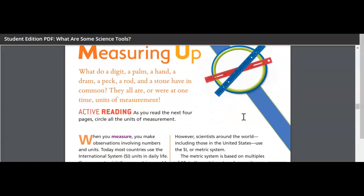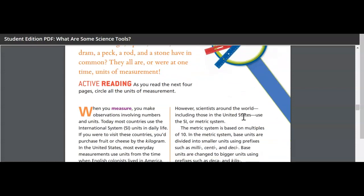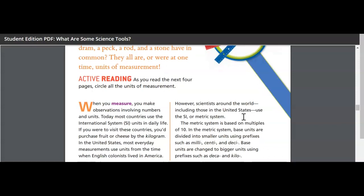Measuring up. What do a digit, a palm, a hand, a dram, a peck, a rod, and a stone have in common? They all are or were at one time units of measurement. So when you measure, you make observations involving numbers and units. We talk about this in math all the time. Today, most countries use the international system, SI, units in daily life. If you were to visit these countries, you'd purchase fruit or cheese by the kilogram. In the United States, most everyday measurements are units from the time when English colonists lived in America.